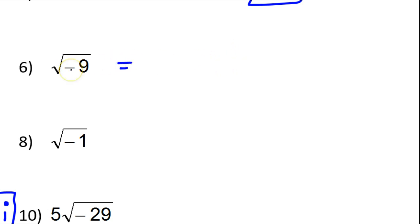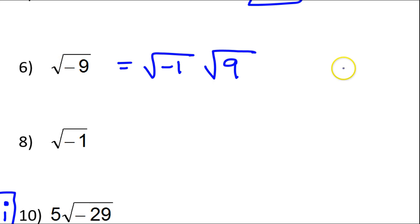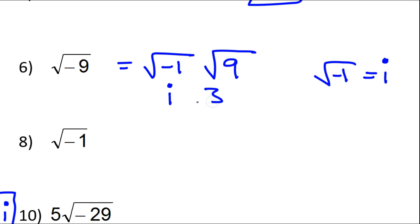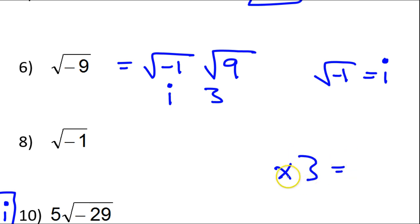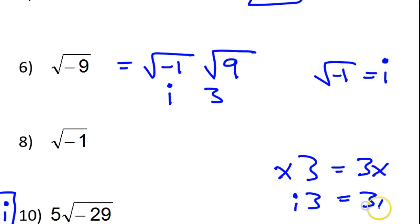I could look at this as the square root of negative 1 times the square root of 9. Because we normally couldn't take the square root of a negative number, but the square root of negative 1 is defined as the imaginary unit i. So this would be i. And the square root of 9 is 3. Now, we don't write i3 the same way we don't write x3. Instead, if we have a variable and a number, we write 3x. And if we have i and a number, we write 3i. So the final answer would be 3i.